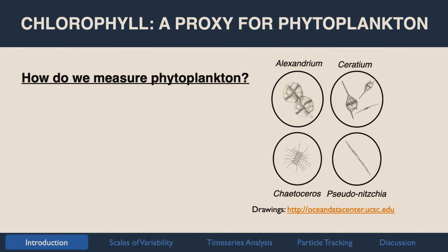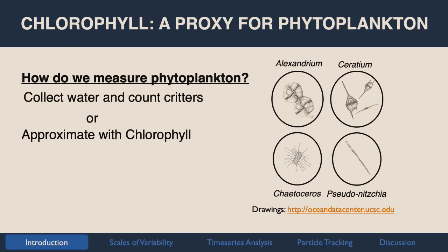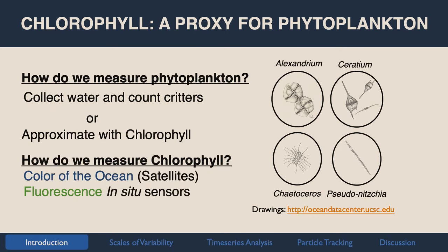I have to introduce how we actually measure phytoplankton. These are four illustrations of common species we see in the bay here, representing only four of hundreds of different species. You could go out and collect water, put it under a microscope and count them, but that's fairly tedious and these things are constantly changing over space and time. My solution is to approximate phytoplankton using chlorophyll — the photosynthetic pigment in plants, phytoplankton, and marine algae. We can measure this pretty reliably by looking at the color of the ocean from satellites and by looking at the fluorescent properties of chlorophyll using in situ sensors.